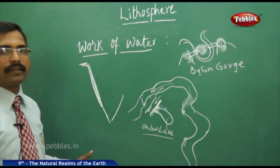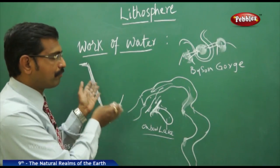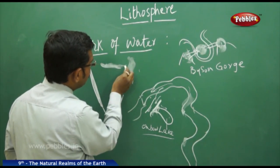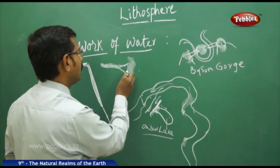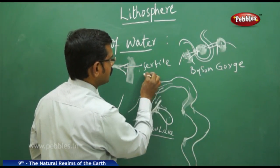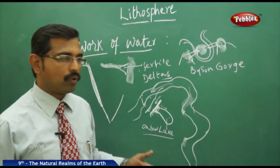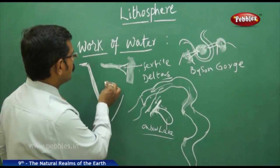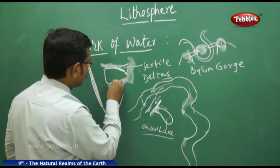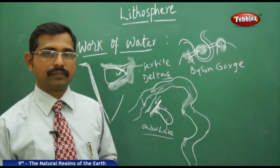We also have deltas. When the river meets the sea, it deposits sediment at its mouth, slowly forming a delta-shaped landmass that is very fertile. For example, the Krishna-Godavari delta is formed by the rivers Godavari and Krishna, depositing material and forming this delta shape. These kinds of deltas are very fertile for agriculture, which we will study in the next classes.